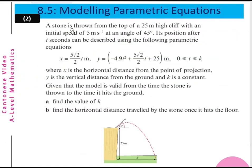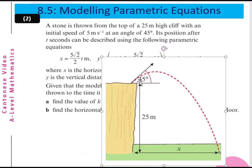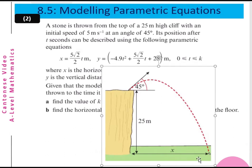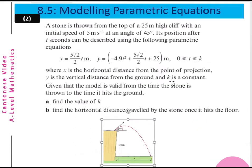One more example. A stone is thrown from the top of a 25-meter-high cliff with an initial speed of 5 meters per second at an angle of 45 degrees. The parametric equations are: x equals (5√2/2)·t and y equals −4.9t² + (5√2/2)·t + 25, where t is from 0 to k. x is the horizontal distance from the point of projection, and y is the vertical distance from the ground.